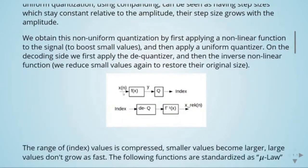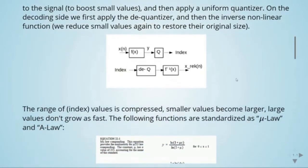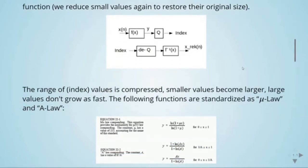Here is the scheme. We have our signal, we apply a nonlinear function, then the uniform quantizer produces an index. In the decoder we take that index, apply dequantization, and then apply the inverse of the nonlinear function to obtain the reconstructed signal. The range of values is compressed so that smaller values become larger and large values don't grow as fast.